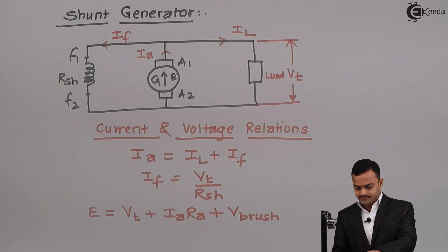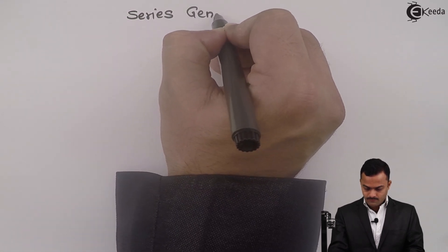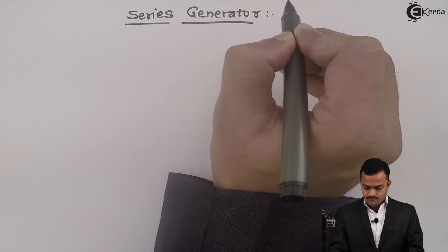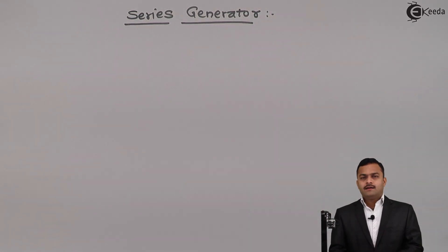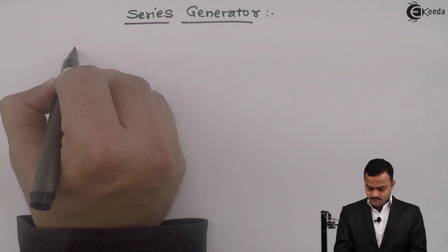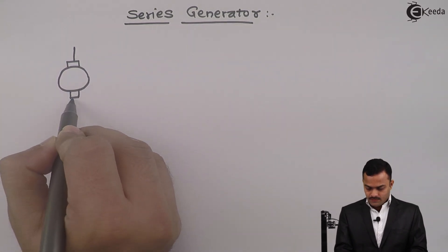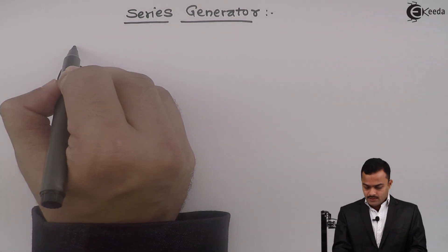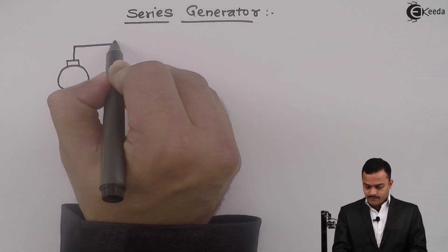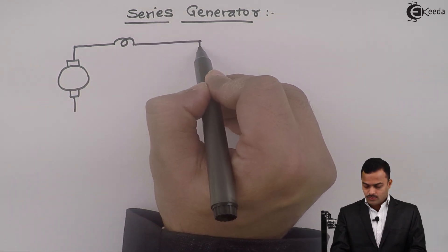Let's move to the series generator now. It's very simple. In the series generator, we have the field winding in series with the armature. So the circuit diagram will be like this. This is the armature of the DC generator. To this, we are having the field winding connected in series, and this is connected to a load.